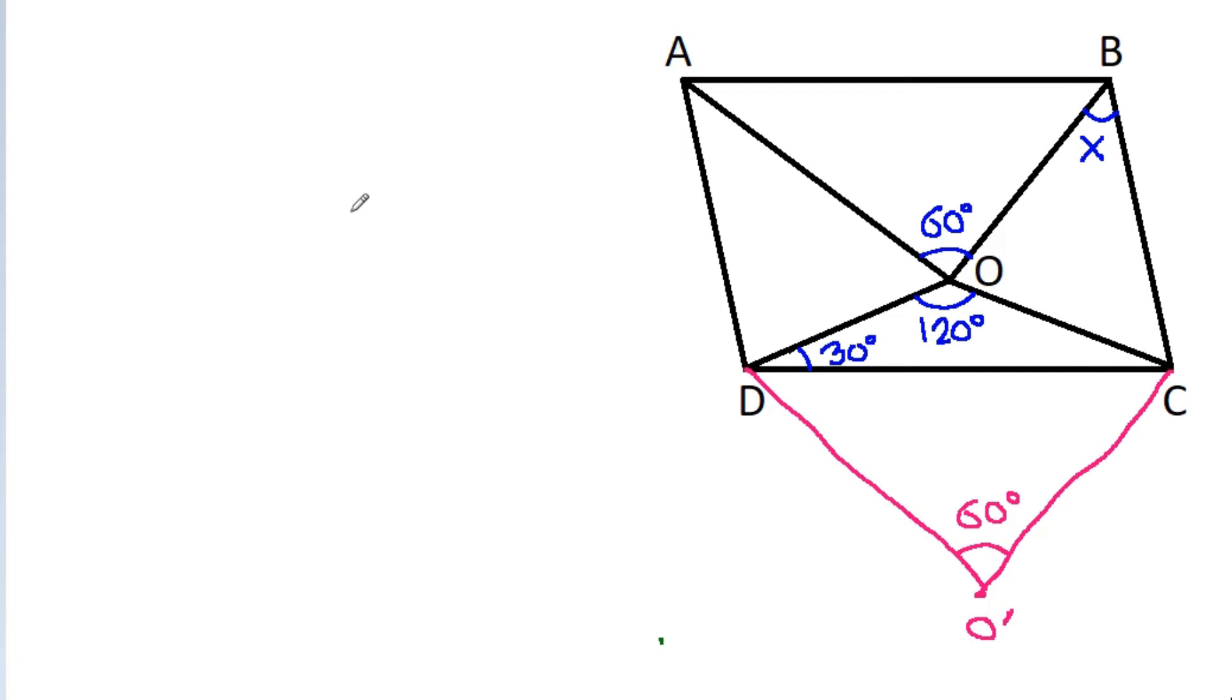And here in DOCO', 120 degrees plus 60 degrees is 180 degrees. So DOCO' will be cyclic.